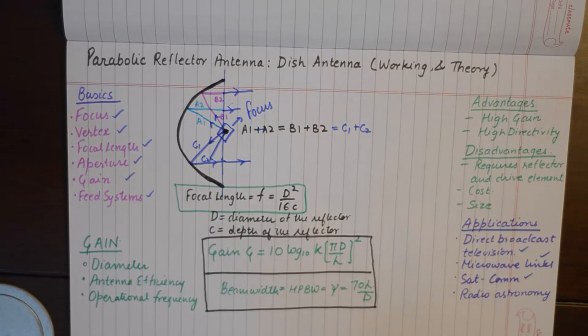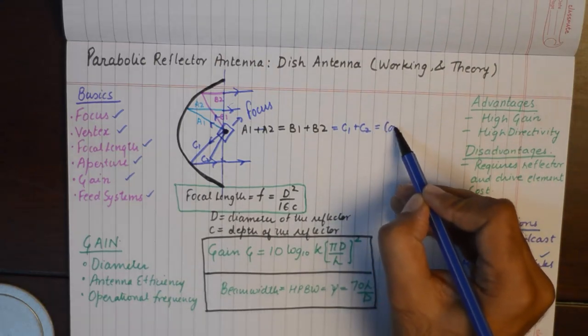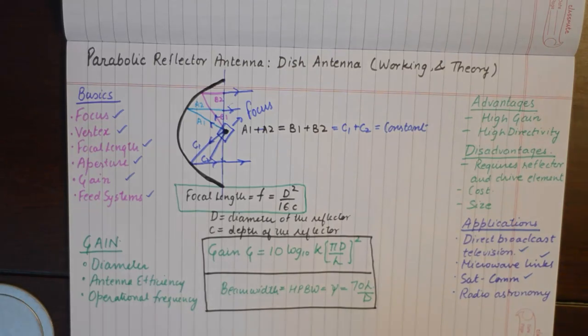This length that a wave covers from the originating antenna and reaching the face of the parabolic antenna is known as the focal length, which remains constant for a particular parabolic reflector antenna.